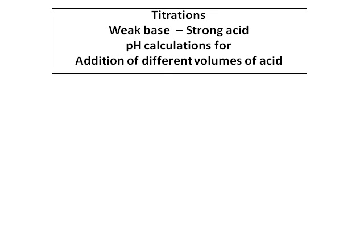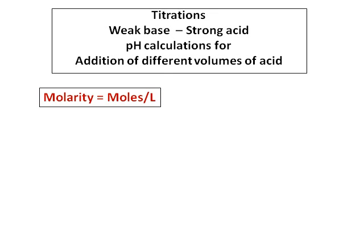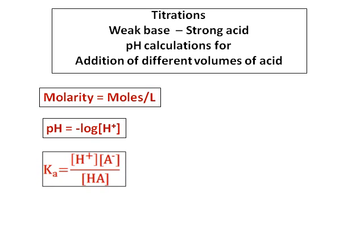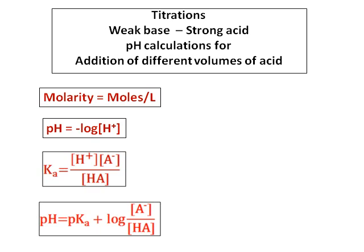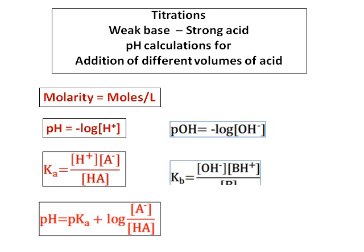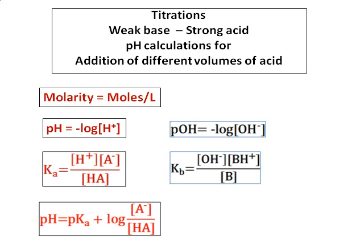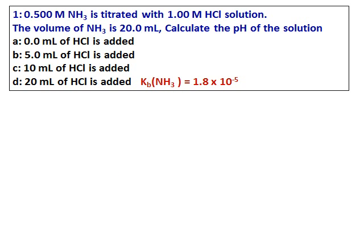We are doing one more case in which I'm going to add a strong acid into a weak base. I'm going to do pH calculations for addition of different volumes of acid into a weak base. Some of the formulae which you will be needing are given there. We are doing a question in which I have 0.500 molar ammonia and I'm titrating it with 1 molar HCl, and the volume of ammonia I'm taking is 20 mL.